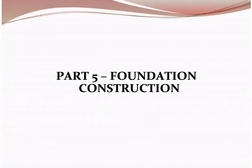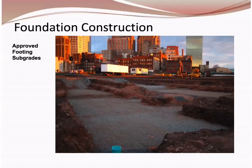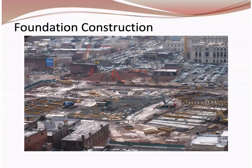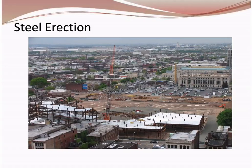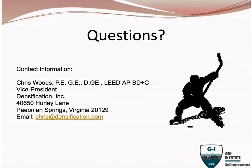A couple of last photos show the scale of the foundations for an arena this large. You can see large radial footings with stone and sumps in the corners to manage water. An aerial photo shows the radial footings going around the outside of the arena with the ice area in the center. Steel going up is visible in one photo, and the finished product where they've been playing for over 10 years is shown. I'll now open it up to the Q&A section.